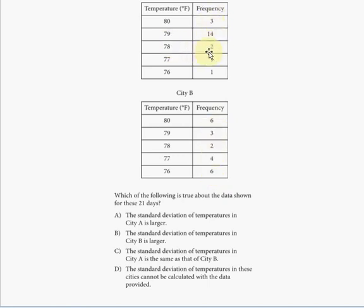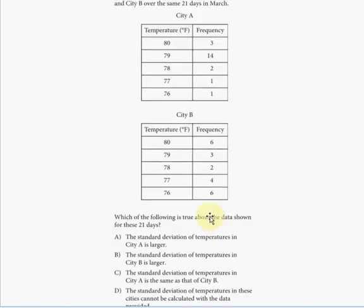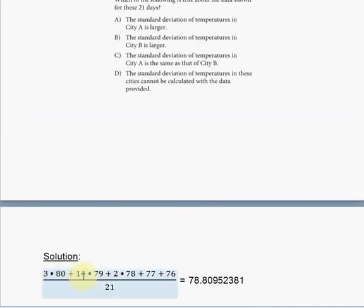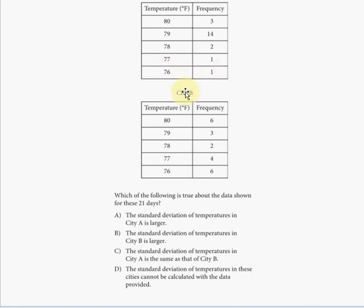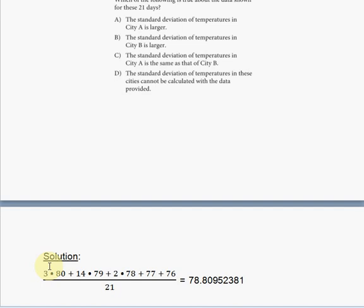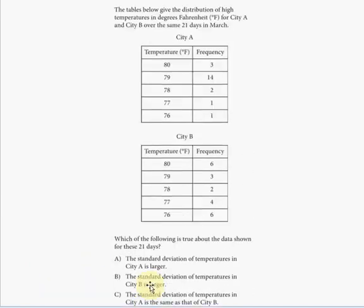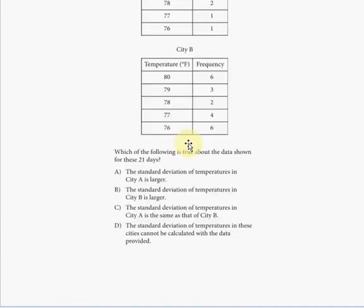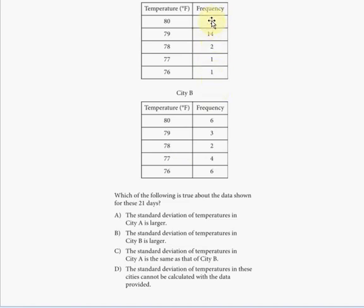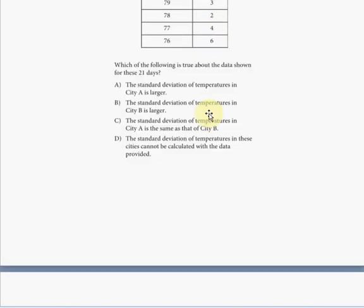How do you calculate the mean? You use the weights for each temperature. You're going to have 80 times 3 plus 79 times 14, because there are 14 days that had 79 degrees. When you do it correctly, you should have 3 times 80 plus 14 times 79 plus 2 times 78 plus 77 plus 76. It's just 77 because there was only one day with 77 and one day with 76. When you get this sum, you divide it by 21, the total number of days. That's 3 plus 14 is 17, plus 2 is 19, plus 1 is 20, plus 1 is 21 days in total for each city.